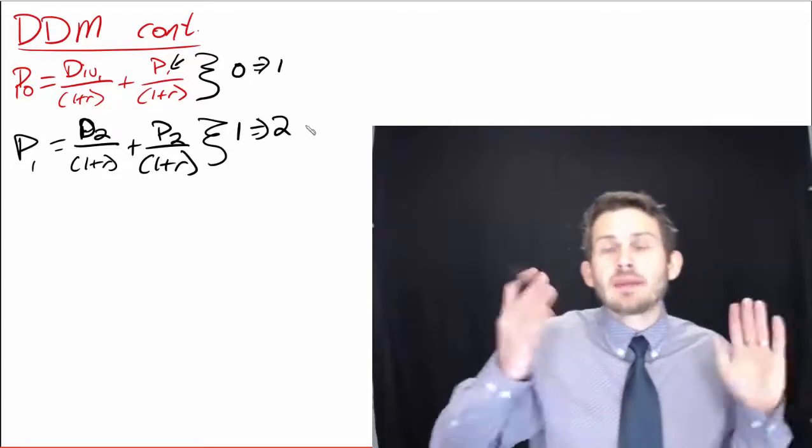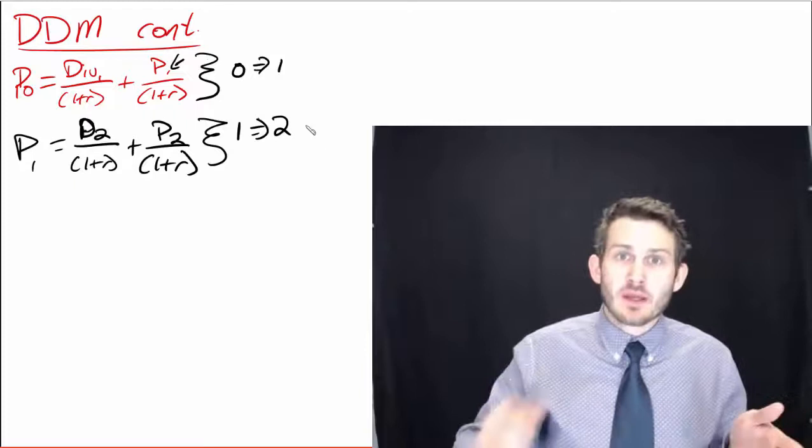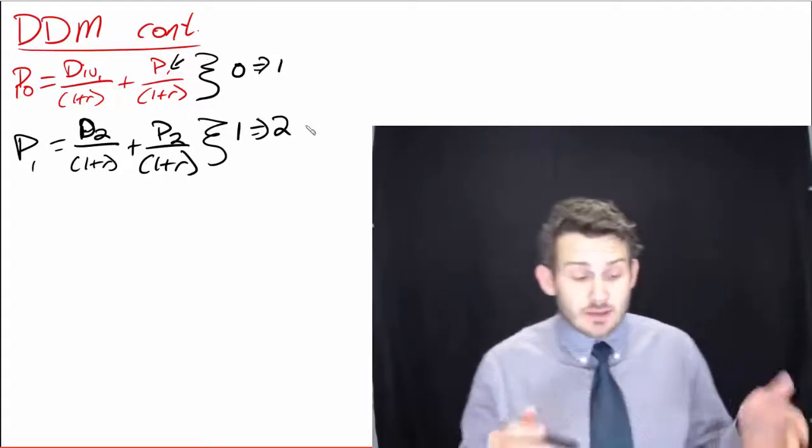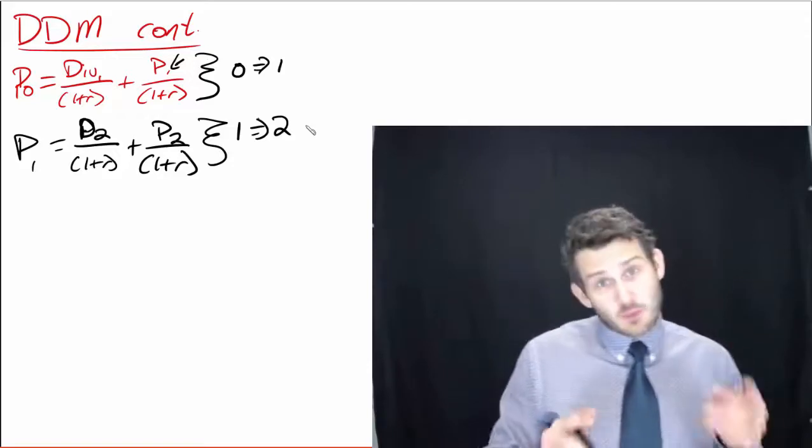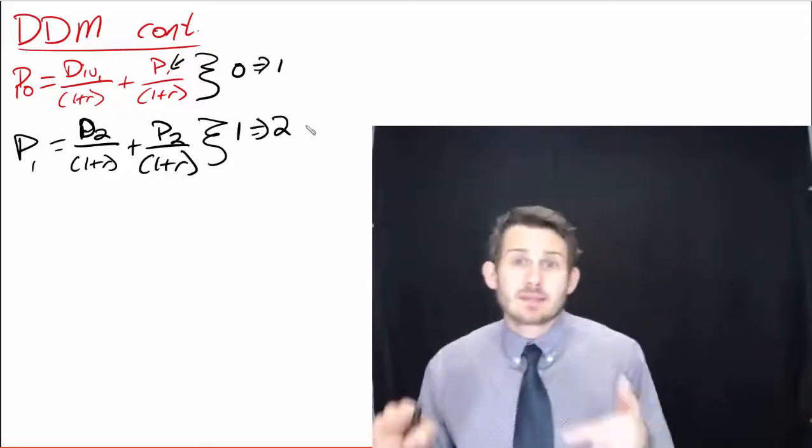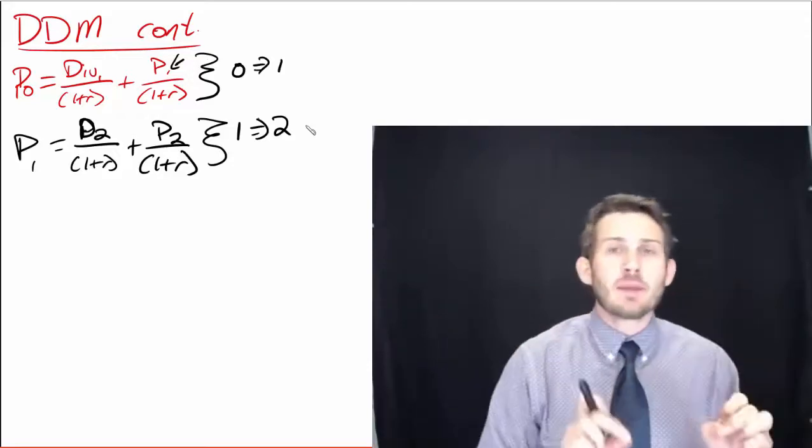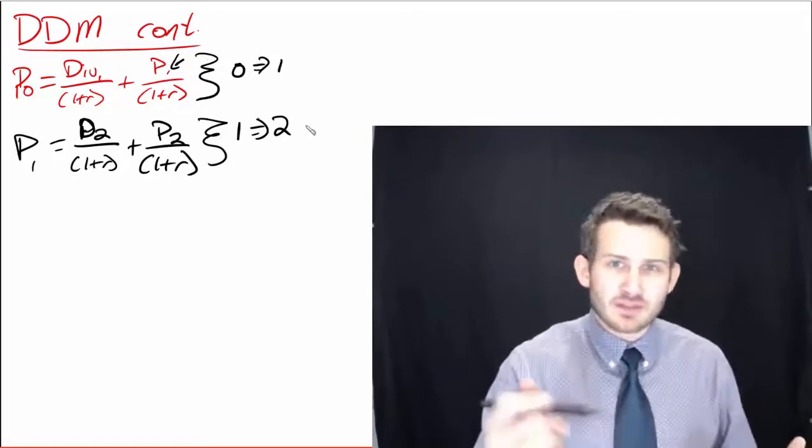So in the first equation, how many time periods are there between 0 and 1? There's one time period. And the second one where we have P1 is equal to all these others, there's one time period from 1 to 2. So we have one time period in between each of them. They're essentially the same exact thing.